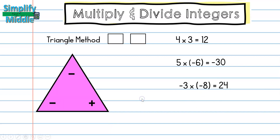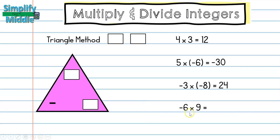Our last multiplication example: negative 6 times 9. Cover the negative and cover the positive, and that leaves a negative. So 6 times 9 is 54, meaning the answer is negative 54.